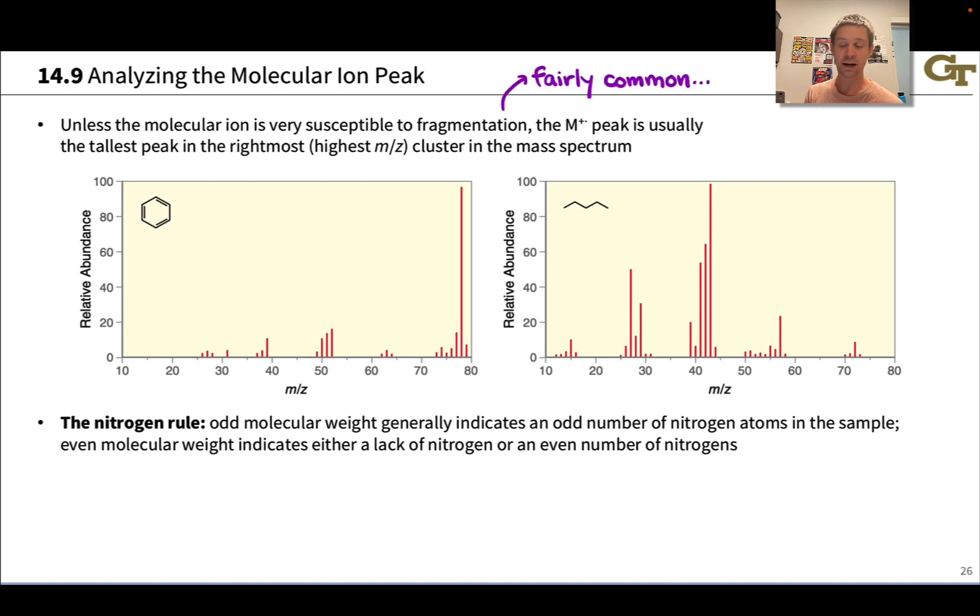Fragmentation is quite common, and particularly when a very stable cation can be produced via fragmentation, it's quite frequently the tallest peak in the spectrum. But if you look farthest out to the right, the tallest peak in this rightmost cluster is often the molecular ion.